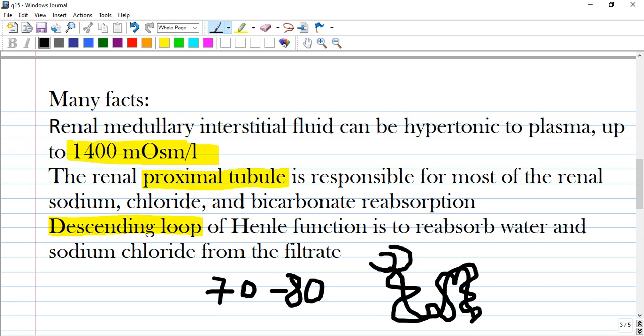Renal medullary interstitial fluid can be hypertonic to plasma, up to 1400 milliosmoles or usually 1200.